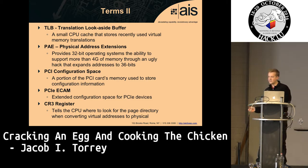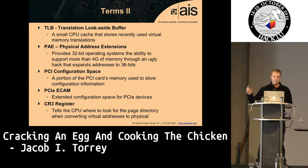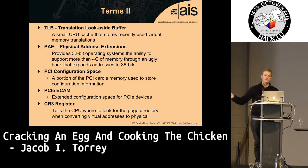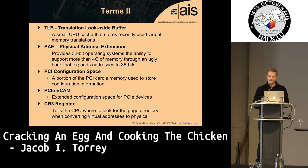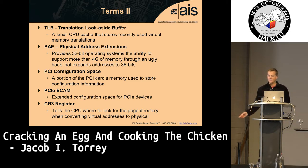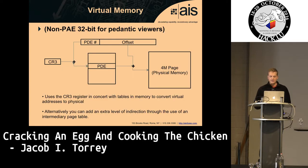The TLB is the translation look-aside buffer, a cache for recently used virtual-to-physical address translations — we'll skip over that one. PCI configuration space is all the registers that configure devices on your platform; for example, a graphics card has registers your driver uses to enable certain features. The ECAM is the extended configuration space for newer PCI Express devices. The CR3 register tells the CPU where to look to do virtual-to-physical address translations.